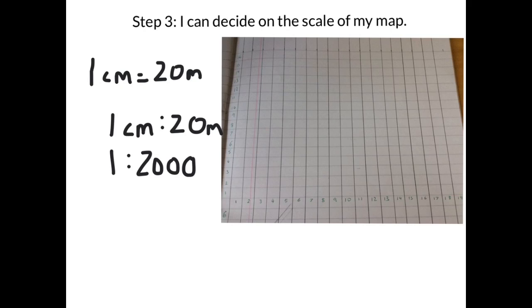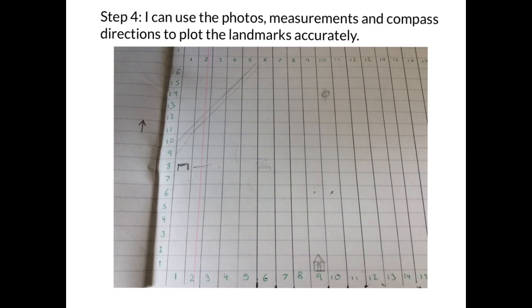Now how do we write that? Well, there's two ways. We could either write it as one centimeter, and we use this symbol here to represent is the same as. So one centimeter is the same as 20 meters on my map, so each one of these squares is 20 meters. You could also write it as a ratio of 1 to 2,000. The reason being is because there's one centimeter to every 2,000 centimeters, as there's 2,000 centimeters in 20 meters.